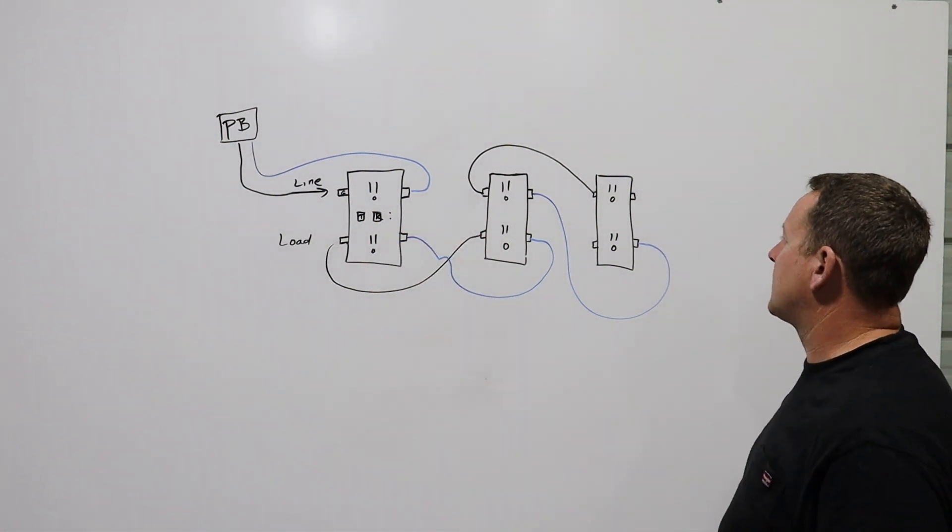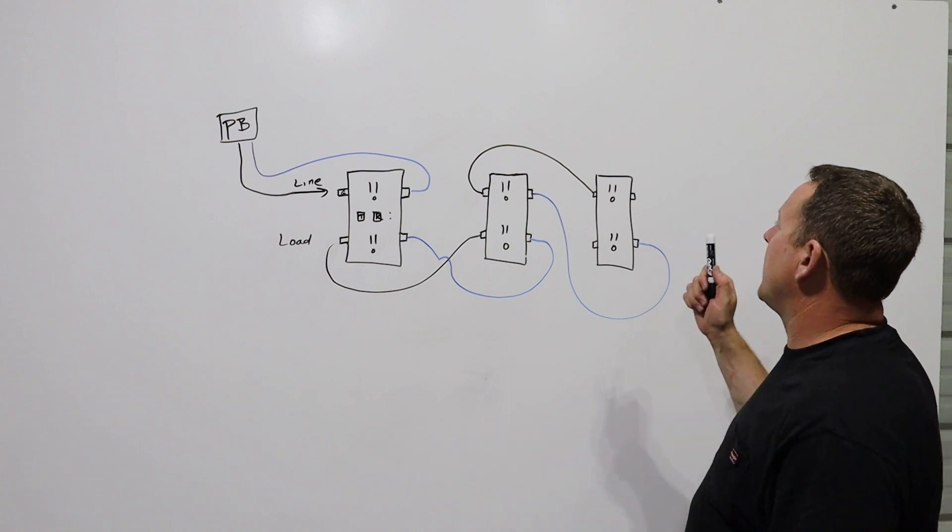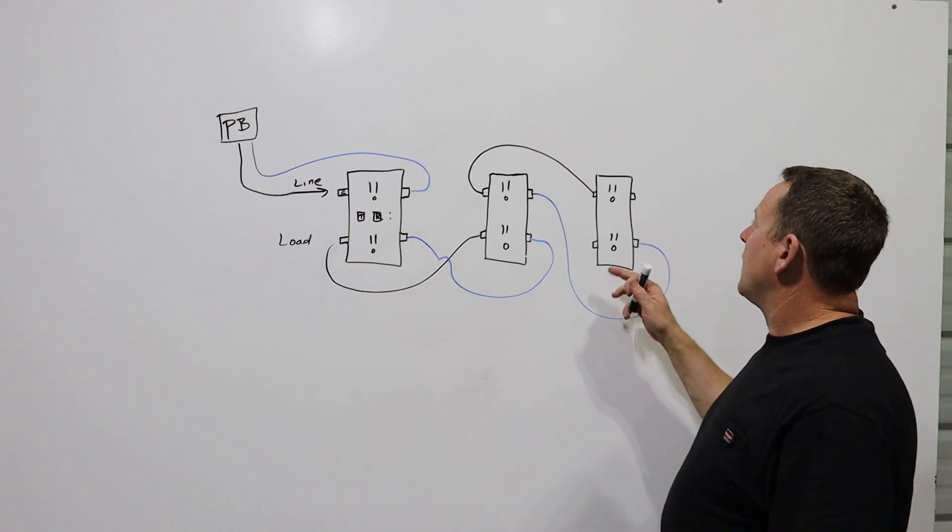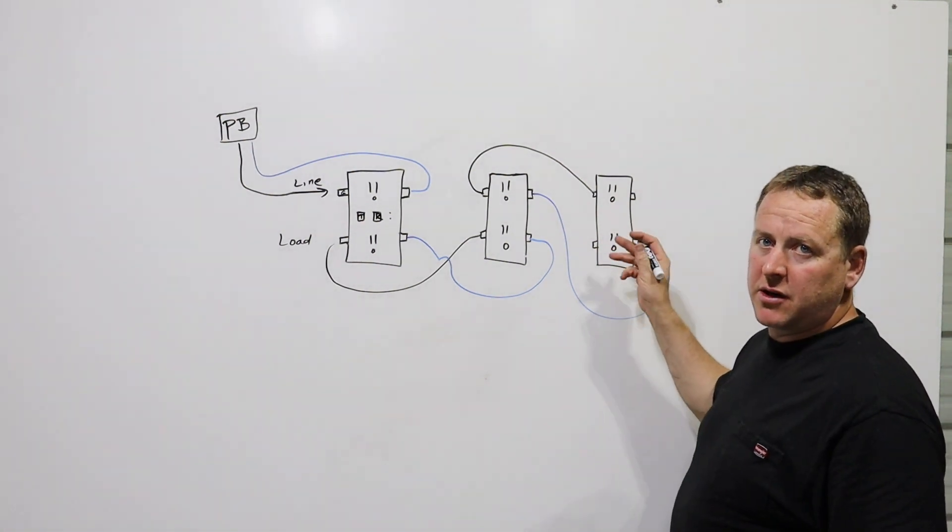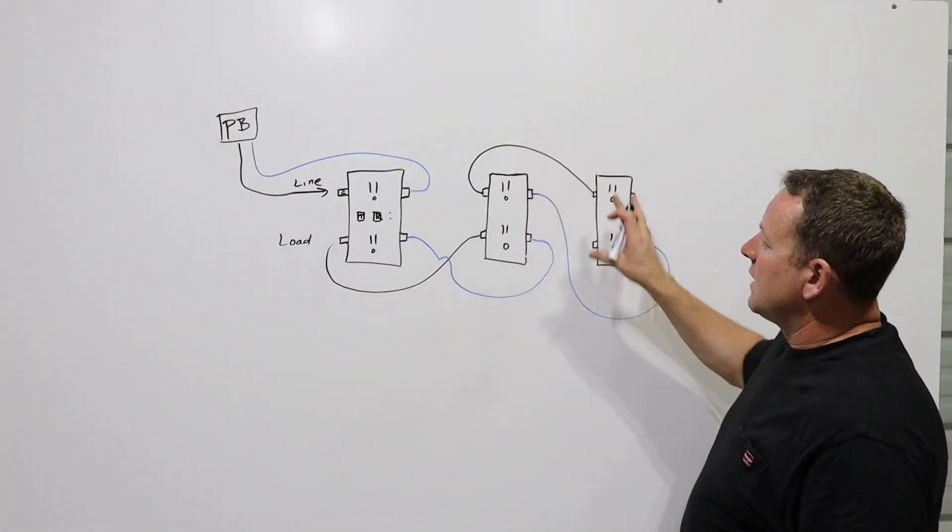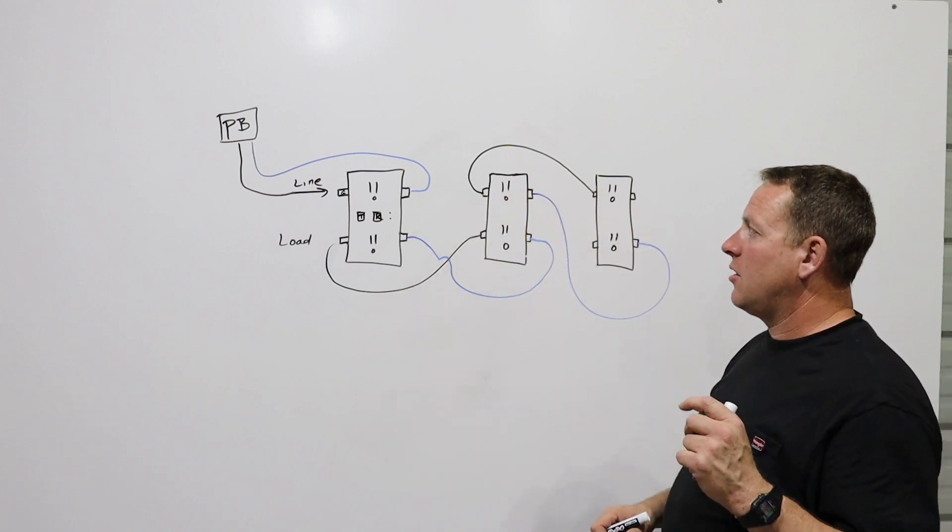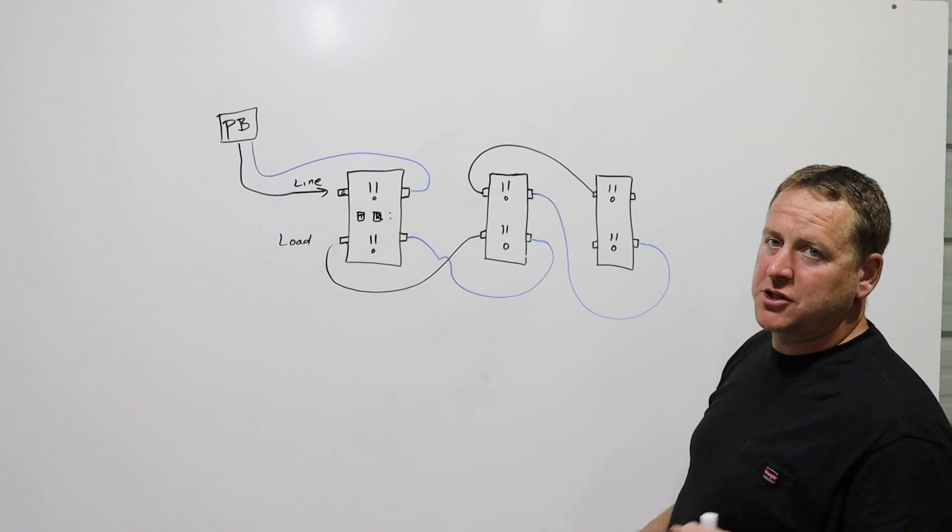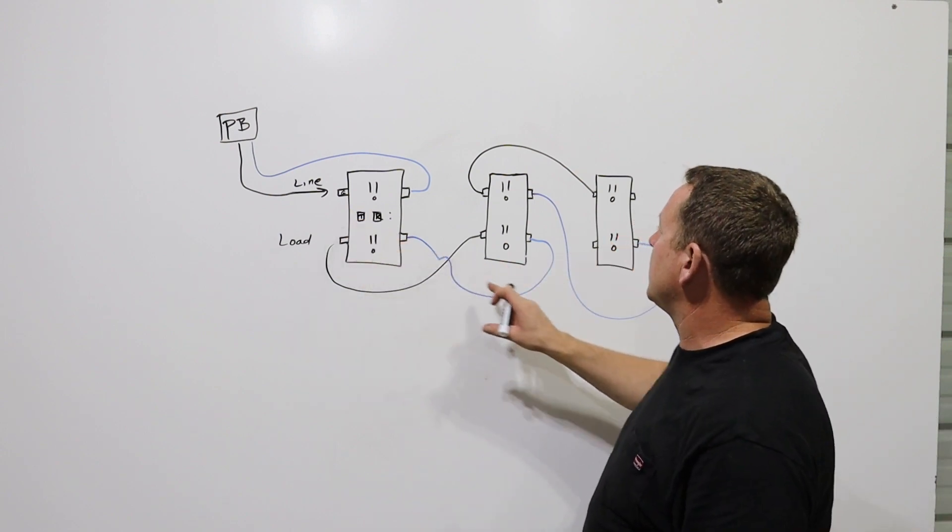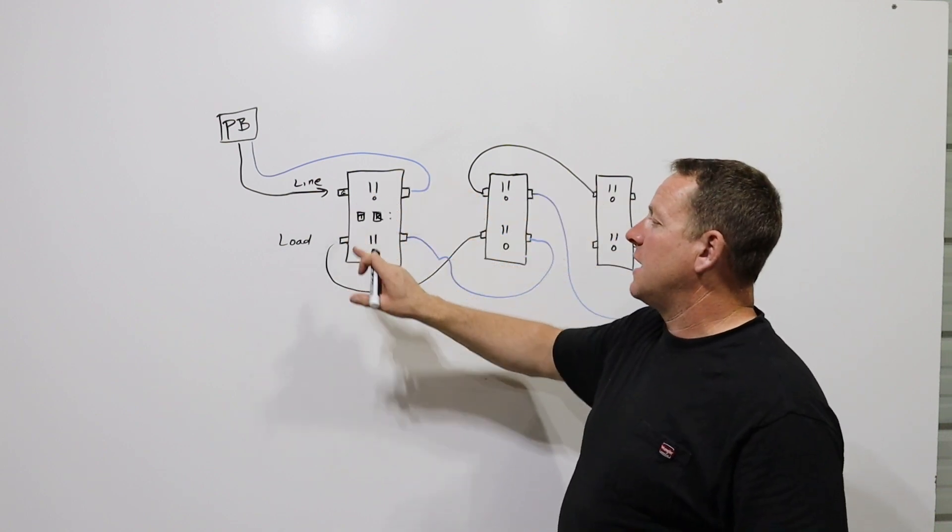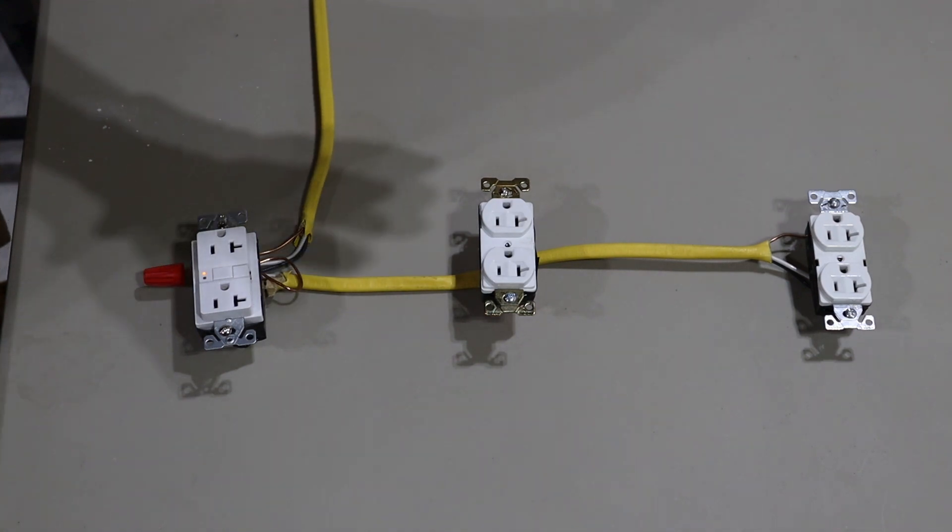Now, your little brother walks in with a knife, butter knife hopefully, and sticks it in the outlet. Sticks on the hot side of this outlet that is not a ground fault circuit interrupter outlet, but it's within the circuit. He sticks a knife in there, and almost instantaneously, he doesn't get shocked. The ground fault circuit interrupter says, hey, something's wrong somewhere on this circuit, and it still trips.